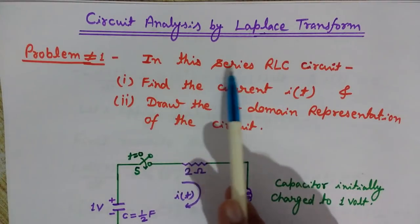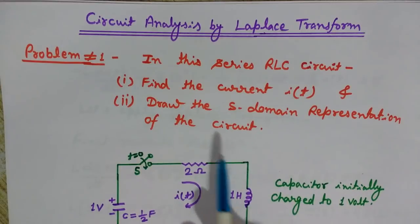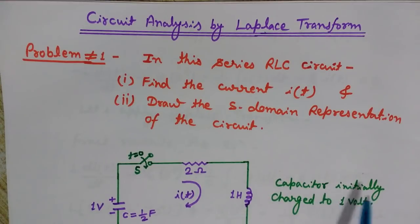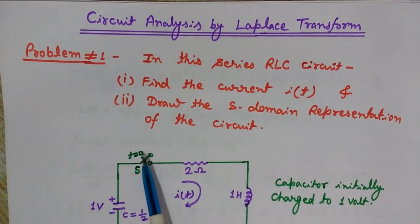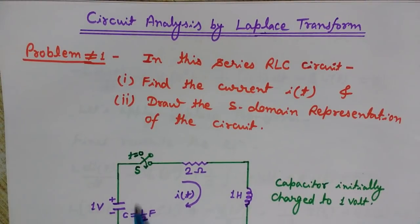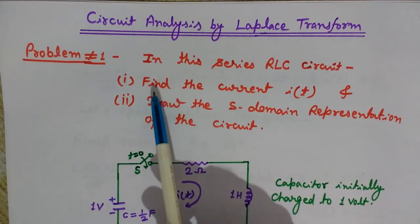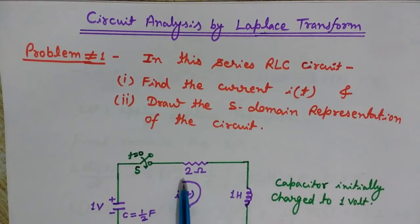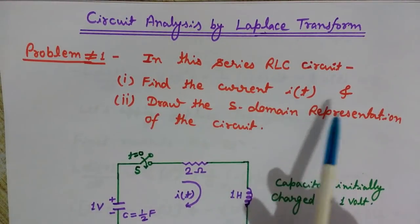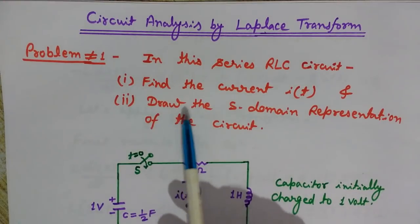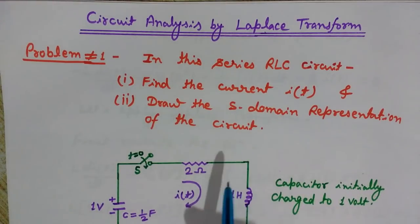Here we are given a series RLC circuit. This capacitor is initially charged to 1 volt, and this is the switch — at t equal to 0, it is closed. The initial condition is this capacitor is charged by 1 volt. We want to find the current I(T) in this circuit, and we also want to draw the S-domain representation of this circuit.